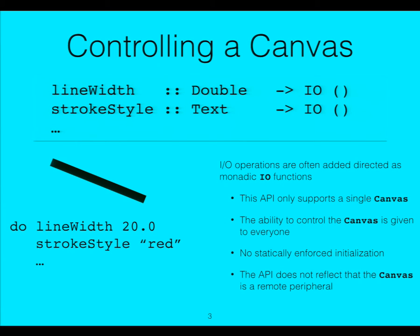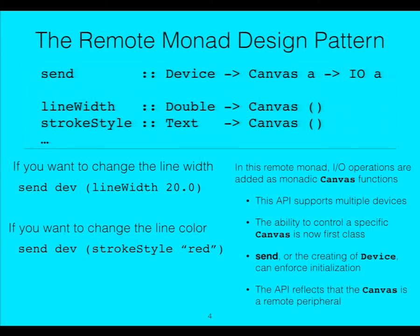What we're proposing is there's another way of doing things that people have done for years — it just hasn't been given a name. We call it the remote monad, and we call it a design pattern. A design pattern is a wavy way of saying there isn't a Hackage package for this, but there are dozens of Hackage packages that use this particular design. Rather than build something out of the IO monad, you build it out of another monad that's specifically for that remote service, then use a send command. That send command — like a run command — takes the remote monad and runs it remotely so you can get an answer locally.